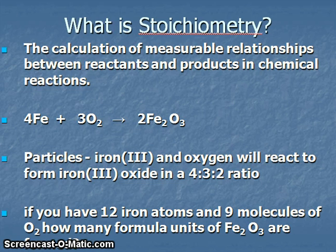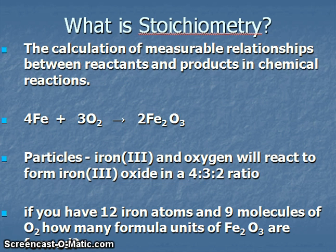There are a number of different levels at which we can understand chemical reactions. Let's consider first what's going on at the particle level. Stoichiometry is the calculation of measurable relationships between reactants and products in chemical reactions. Let's consider the reaction of iron oxidizing.